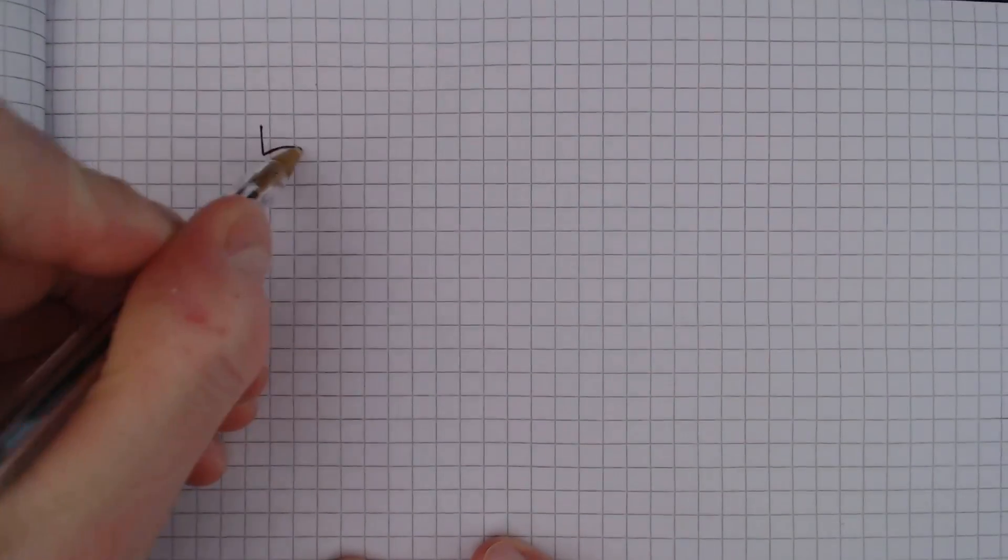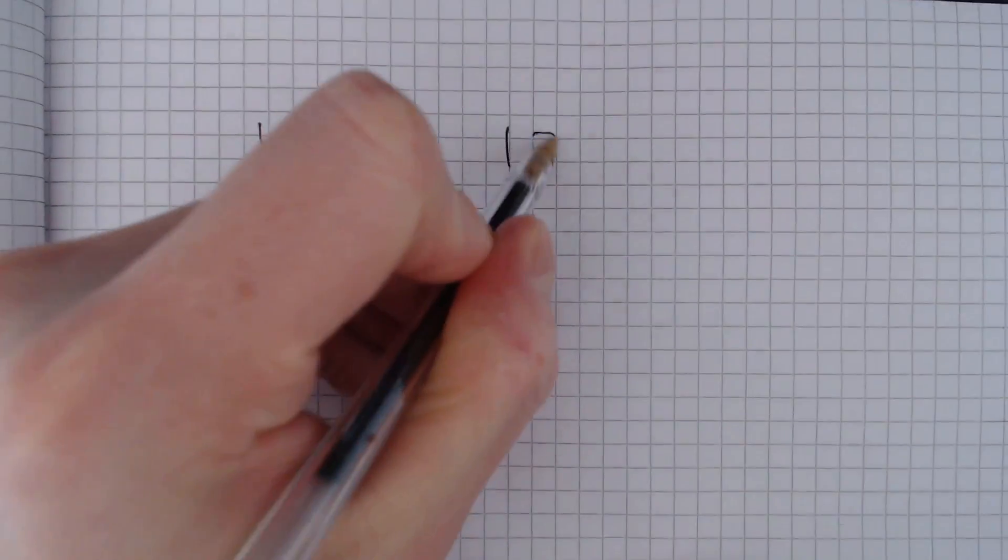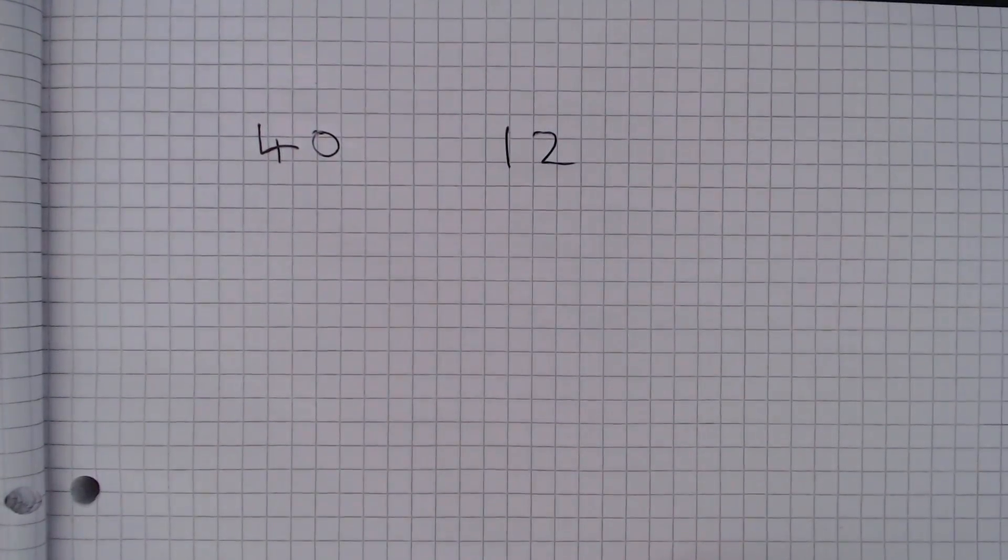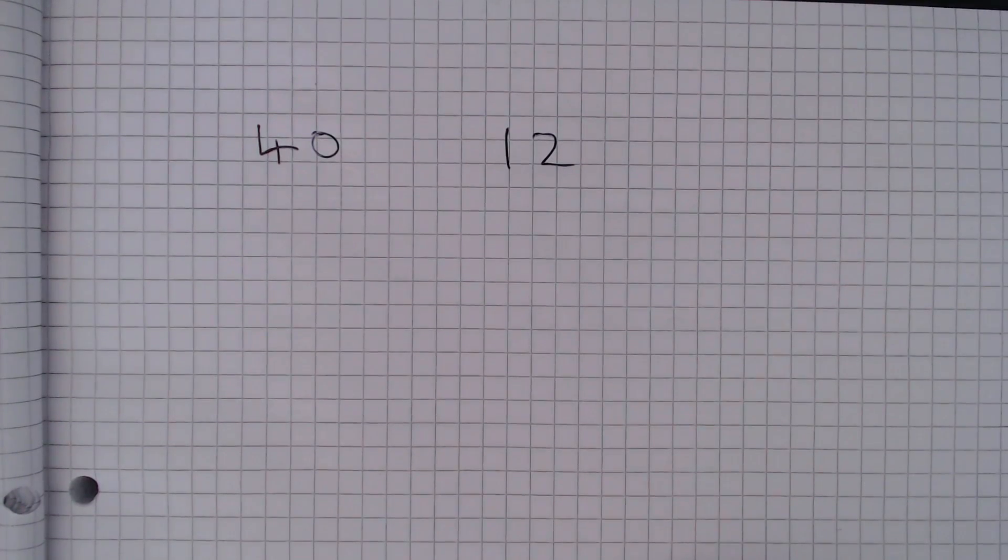So here we've got a box of 40 chocolates, of which 12 are made from white chocolate. The question asks us to find the proportion of chocolates that are not made from white chocolate.